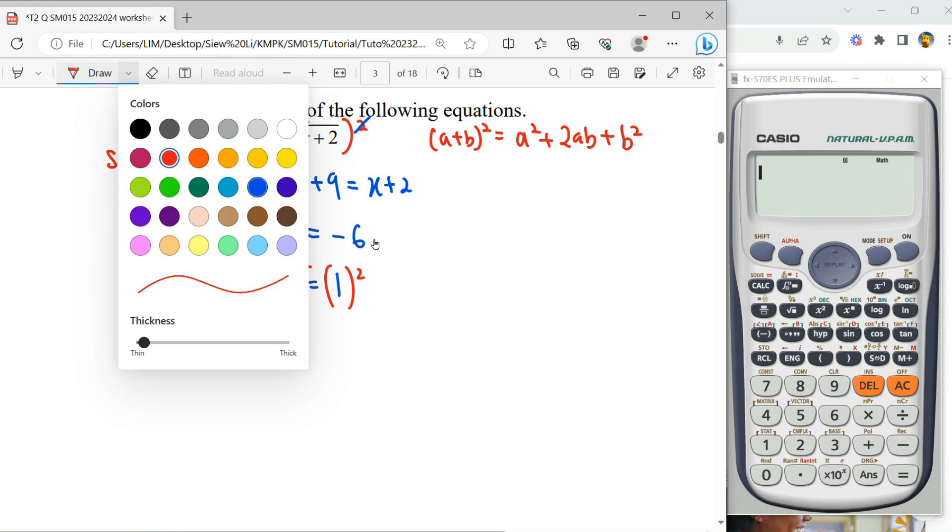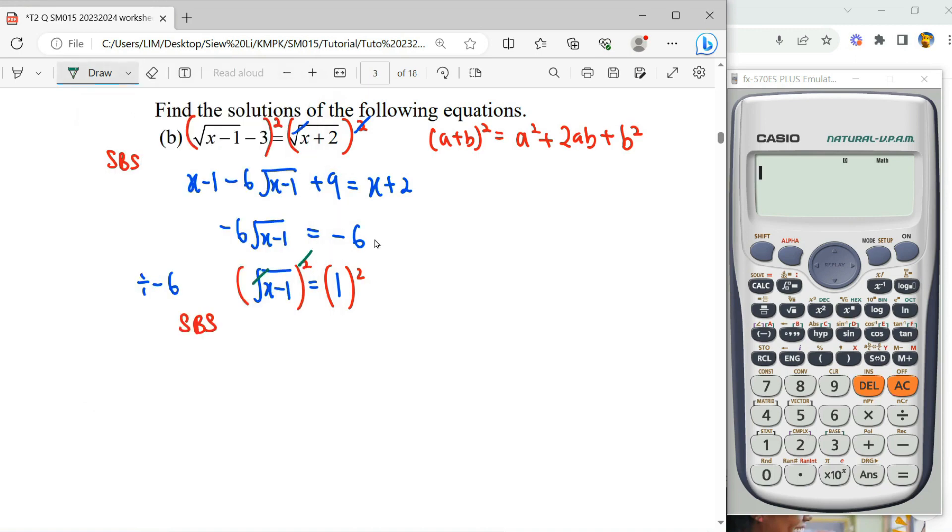When we square both sides, you can notice that square root N square cancel off, we get X minus 1. Only 1 square is 1. So X is equals to 2.